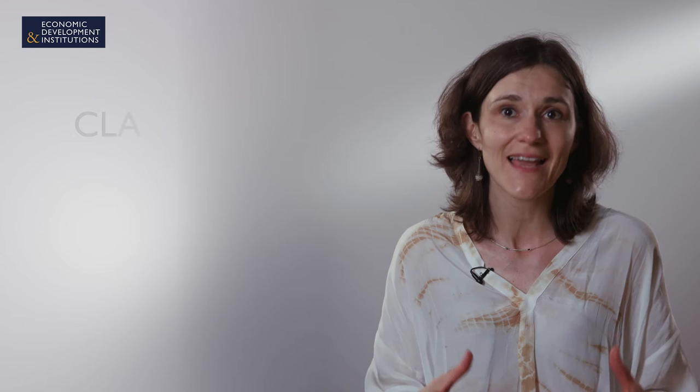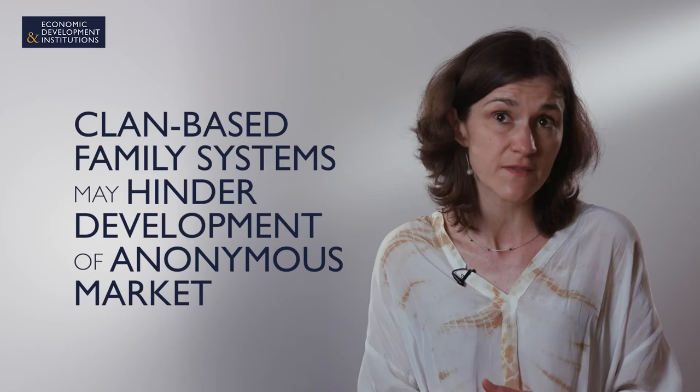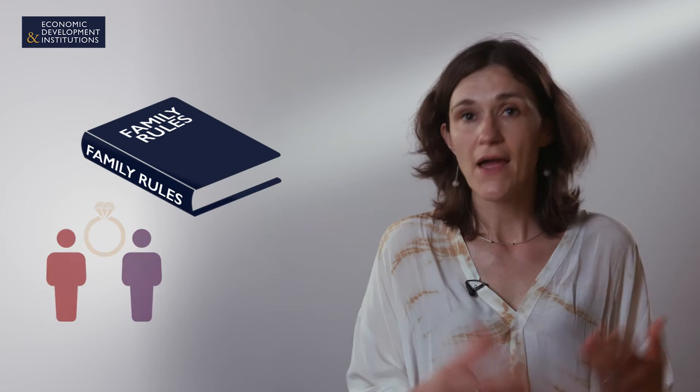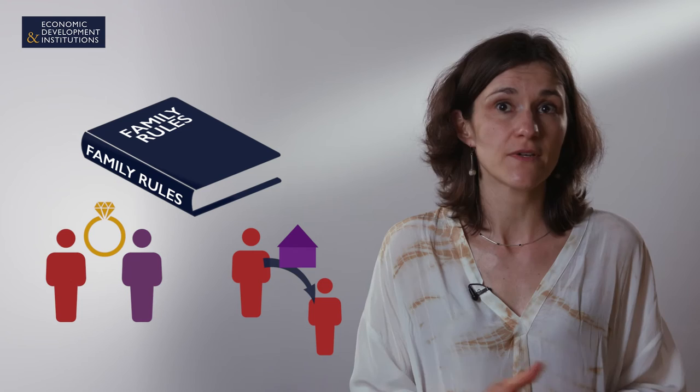Family systems also matter a lot because their organization may hinder or favor processes of development for societies as a whole. Economists have done research showing that some family systems — clan-based family systems, for example — may hinder the development of an anonymous market. Families also set up rules about marriage and inheritance, and all of these have very deep consequences for individual mobility and for individuals' lives.